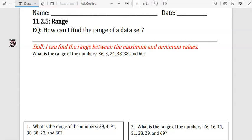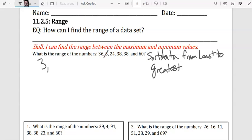The first thing you want to do is make sure that the numbers are in order, least to greatest. You could also do greatest to least, but usually they have it in ascending order. So let's put those in order here. 3 looks like it's the smallest, then 24, 36, 38, 38, and 60.